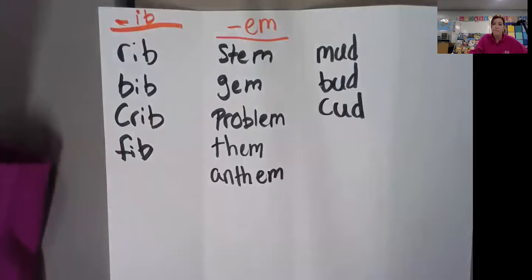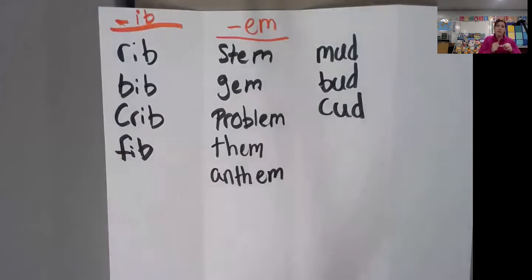Mud, like a pile of mud, bud, like your friend or a flower bud, and cud is something that a cow chews on. What do you notice about all of these words?